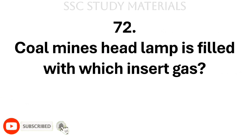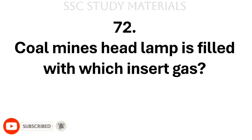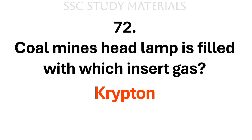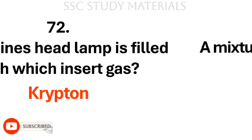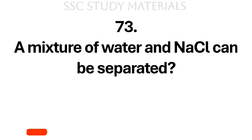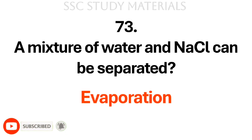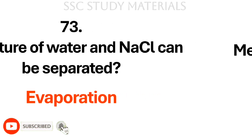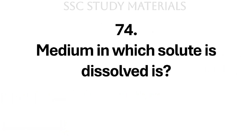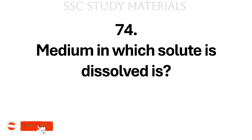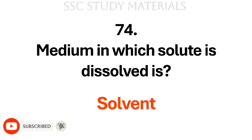Question No. 72: Coal mine headlamps are filled with which inert gas? Answer: Krypton. Question No. 73: A mixture of water and NaCl can be separated by? Answer: Evaporation. Question No. 74: The medium in which solute is dissolved is? Answer: Solvent.